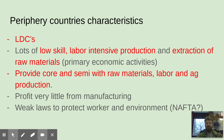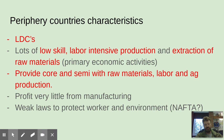Periphery countries do a lot of primary economic activities — intensive agriculture — and provide the core and semi-core with raw materials, labor, and agricultural production. They don't profit very much from manufacturing. They get the jobs but not the finished product, which is where the money is. There are weak laws to protect the environment and workers. NAFTA is an example: jobs went to Mexico because of lower wages and fewer environmental regulations, making Mexico a semi-periphery/periphery supplier for Canada and the United States.